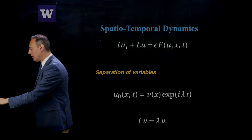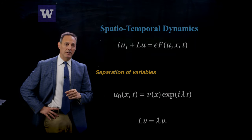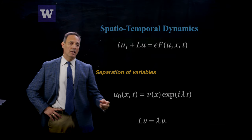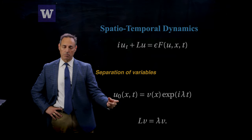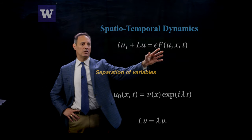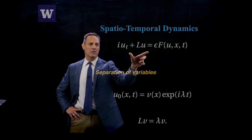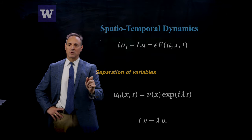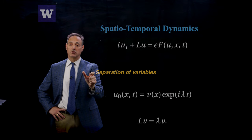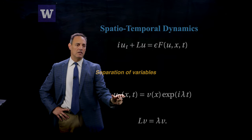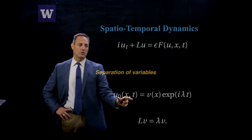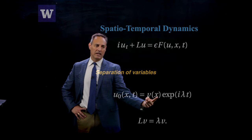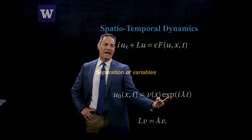I'm also going to force this system with some generic forcing f, and try to understand how the forcing affects the underlying patterns driven by dominant modal structures. To solve this, we start with a separation of variables argument. Take your base solution U-naught, where epsilon is zero, so it just solves the linear part. The modal analysis at leading order is going to be linear. U-naught is the solution to the linear problem, broken up into a spatial part V(x) and e^(i lambda t).